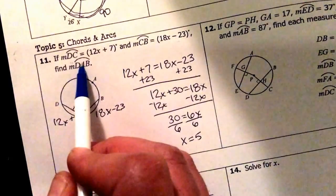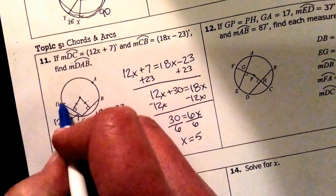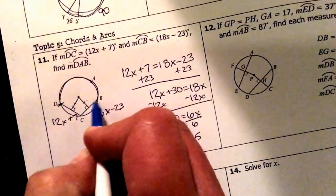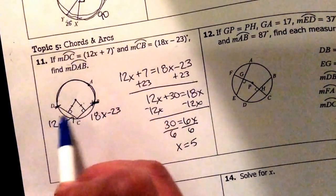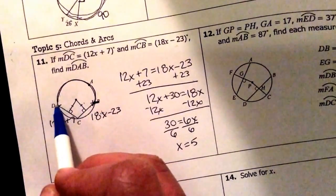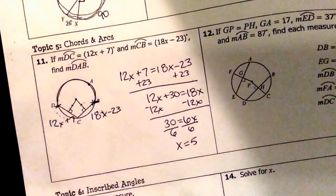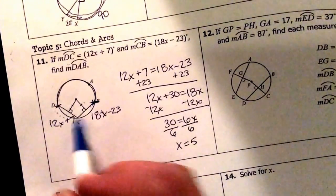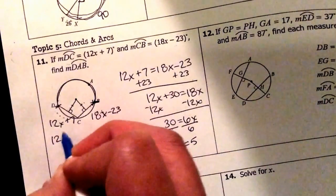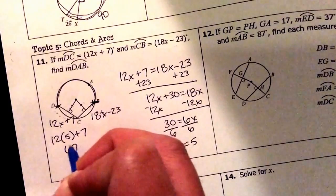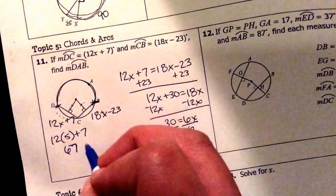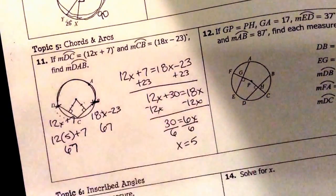Now we're not finished because they want us to find arc DAB here. Now I do know that this is the missing piece if I know what these two pieces are. I know that these two plus this one makes 360. So if I go ahead and plug my 5 in here. 12 times 5 plus 7. That's going to be 67.